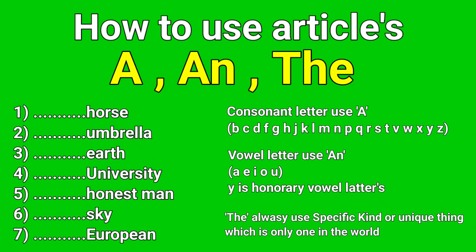Question number one: blank horse. The starting letter is 'h,' which is a consonant sound, so always use 'a.' The answer is 'a horse.' Question number two: blank umbrella. The starting letter 'u' is a vowel letter, so use 'an.' The answer is 'an umbrella.'